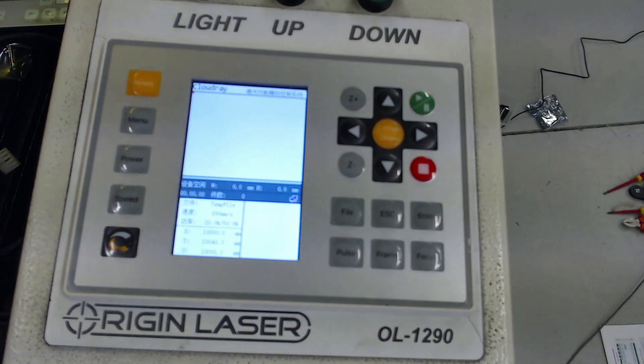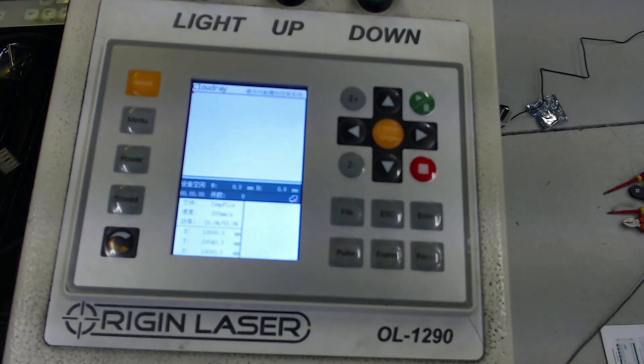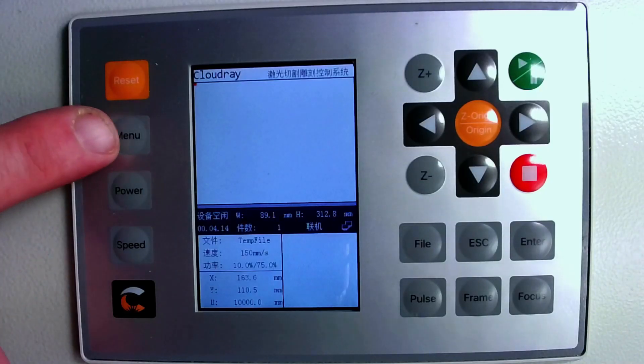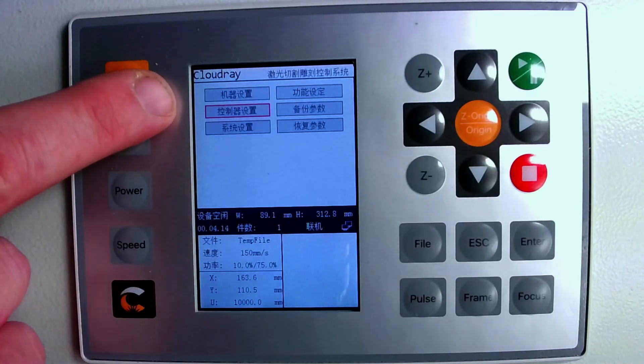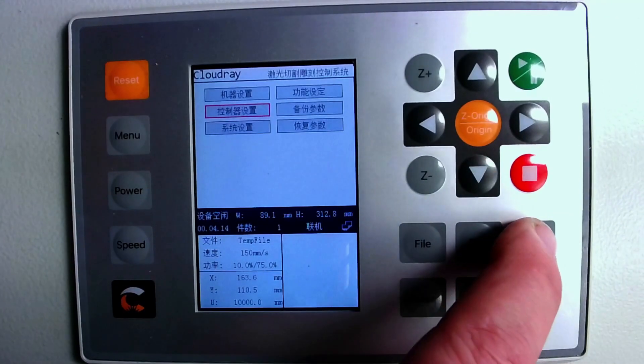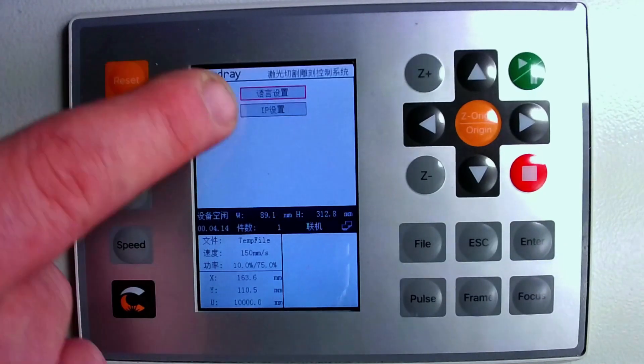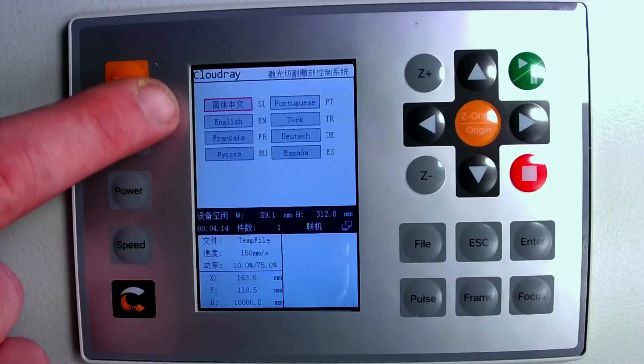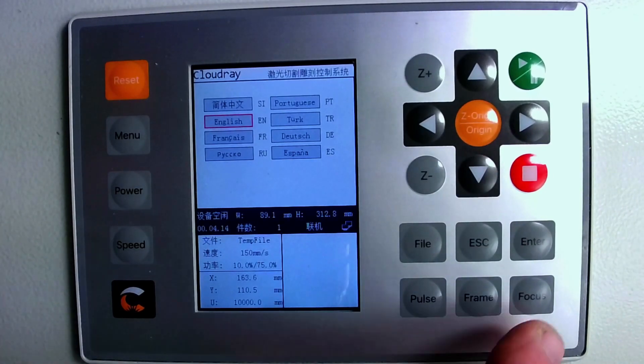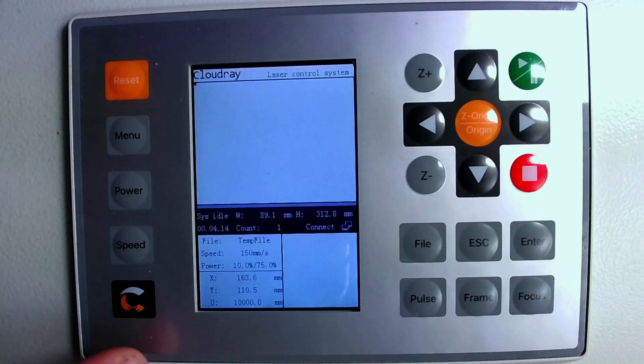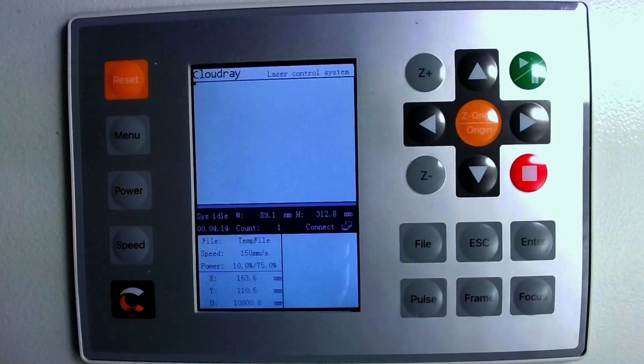When you first turn on the controller it's in Chinese and we need to change it to English. To do that press menu, press the down arrow once onto the second selection, press enter. The first selection press enter and then you can choose your language here. So the second one down is English, press enter and then we'll see that everything is now in the English language.